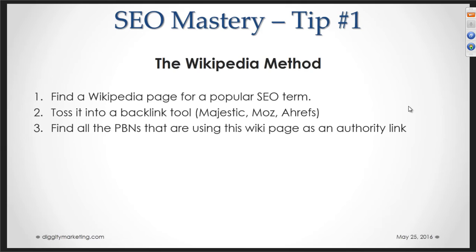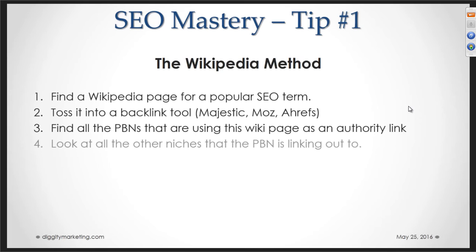So we can use Wikipedia and reverse engineer it to see what PBNs are pointing to it. Then once we have the PBN, we just look at the PBN itself and see what other niches it's pointing out to.